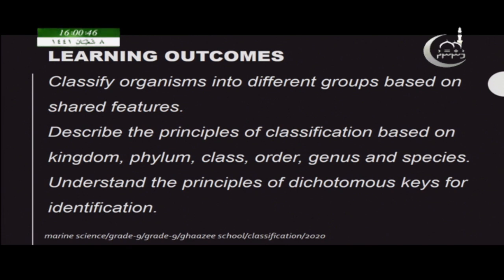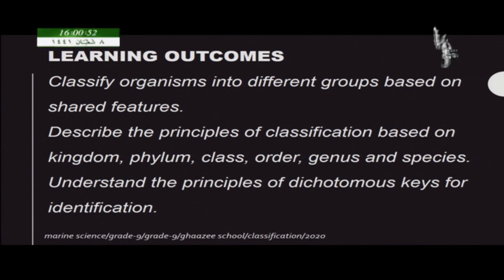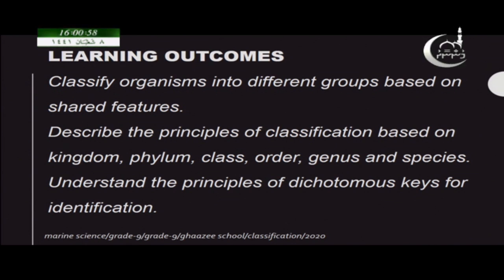There are three major outcomes. One is to classify organisms into different groups based on shared features, and describe the principles of classification based on kingdom, phylum, class, order, genus and species. And the last is to understand the principles of dichotomous key for identification.